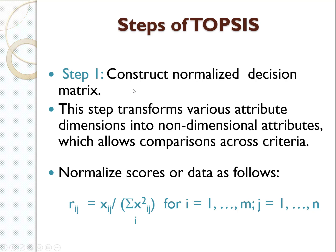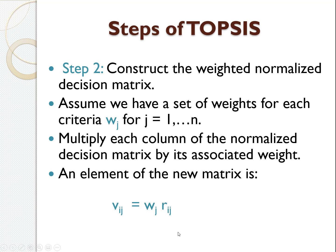Step 1 is normalization. This step transforms various attribute dimensions into non-dimensional attributes, as we already discussed in the simple example, which allows comparison across criteria. We calculate the sum of squares for each criterion, then divide by it to normalize. This is similar to how we normalized in AHP. The result is what we called the standardized decision matrix. Then we multiply the weights.